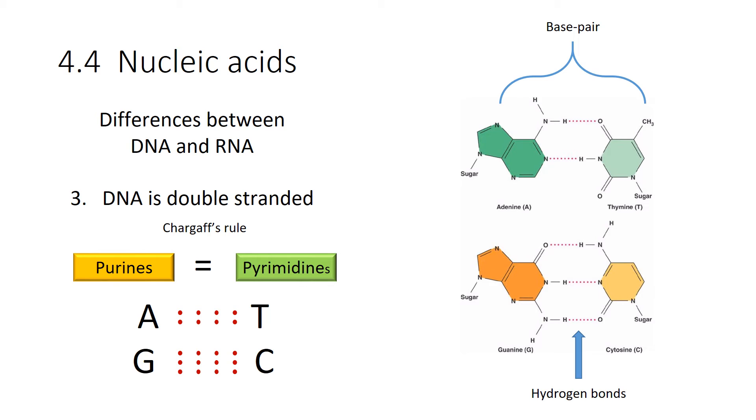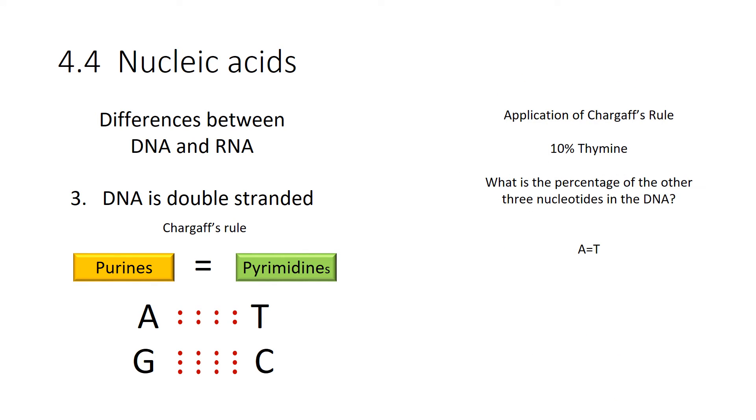Now, when we look at these A's and T's, A forms two hydrogen bonds with thymine. You can see there's two layers of red dots. And guanine always forms three hydrogen bonds with cytosine. So what's the implications here? Well, let's look at Chargaff's rule. How can we apply this? Why is it important?